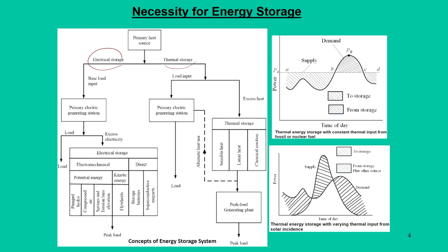Energy storage is possible by two main methods: one is electrical storage, and the other is thermal storage. In the previous lecture, we discussed electrical storage, also called electromechanical systems, where storing is mainly based on potential energy — including pumped hydro storage and compressed air storage systems. In this lecture, our focus is on thermal energy, specifically sensible heat-based thermal energy storage and latent heat-based energy storage systems.